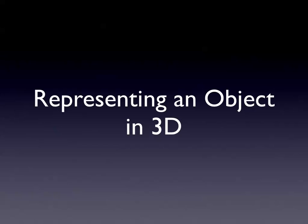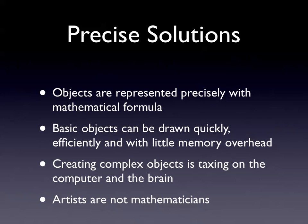Now I've talked about vector operations and abstract stuff - what you really want to do is represent an object like me, you, a chair, in 3D. There are several - probably hundreds - of different ways to do this. There are absolutely precise solutions where an object is exactly represented using mathematical formula. For a sphere, you want all points to be exactly the same distance from the centre. Basic objects can be drawn quickly and efficiently with little memory overhead - for a sphere, you just have a function, using maybe a couple of operations.